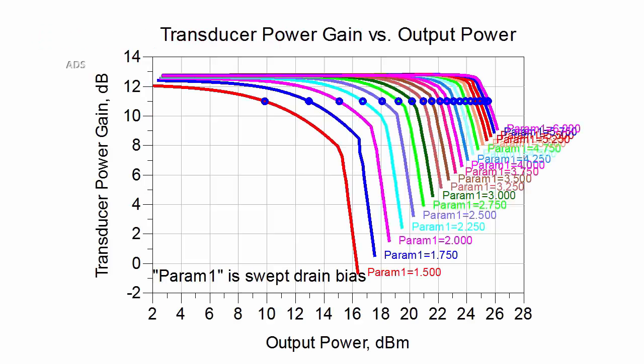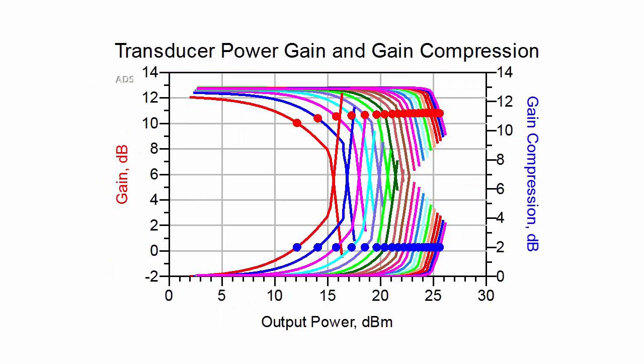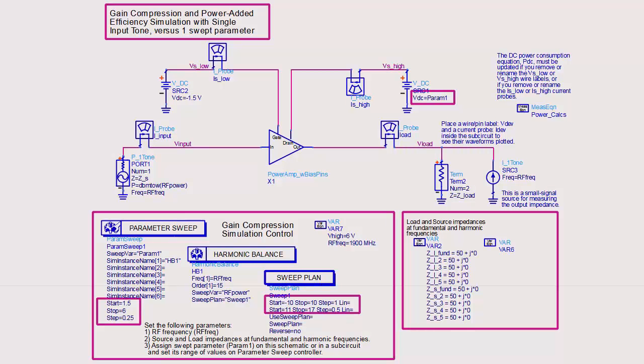Now I'll cover simulations for generating shaping tables. As you vary the amplifier's bias, its gain also varies. You will want to investigate this gain variation so you can shape the drain bias in response to the input signal envelope. You may want to maintain constant gain, constant gain compression, or try to keep the amplifier always operating at peak efficiency. The first step is to simulate the gain of the amplifier as a function of both the input power and drain bias.